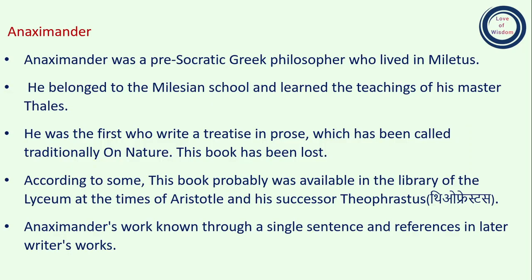Hello everyone. Today's topic is an examination of the concept of Apeiron. Anaximander was a pre-Socratic Greek philosopher who lived in Miletus. He belonged to the Milesian school and learned the teachings of his master Thales, as discussed in the previous video about Tales of Miletus.